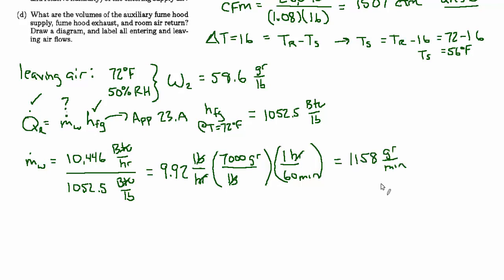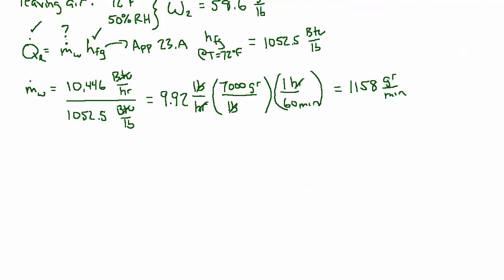So that's how much water vapor is being added to the air on a continuous basis. And now we can use this formula that says the mass flow rate of water equals the mass flow rate of air times the delta of the humidity ratios of the two streams. So we just found the mass flow rate of water.